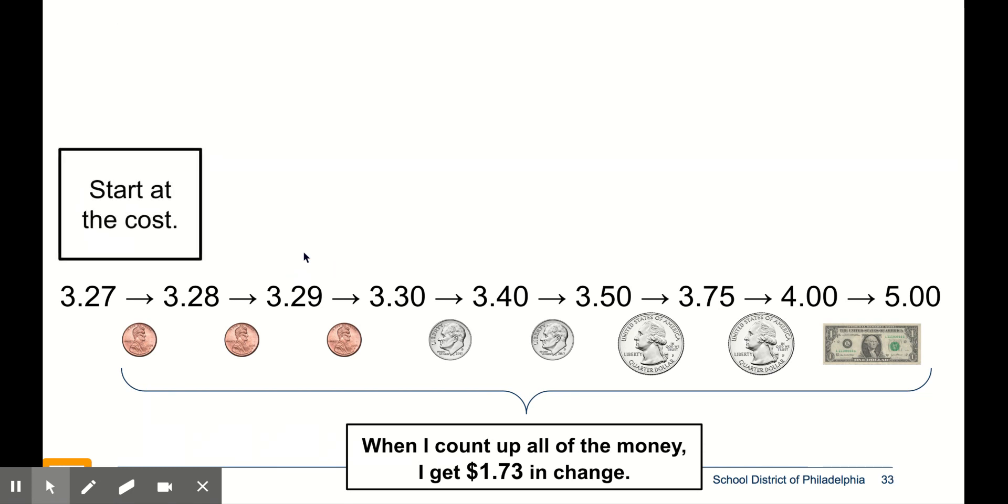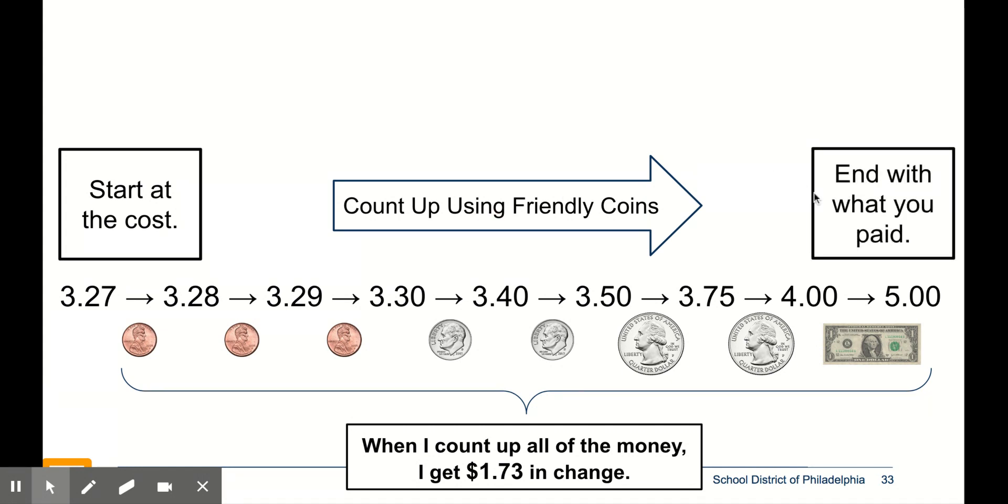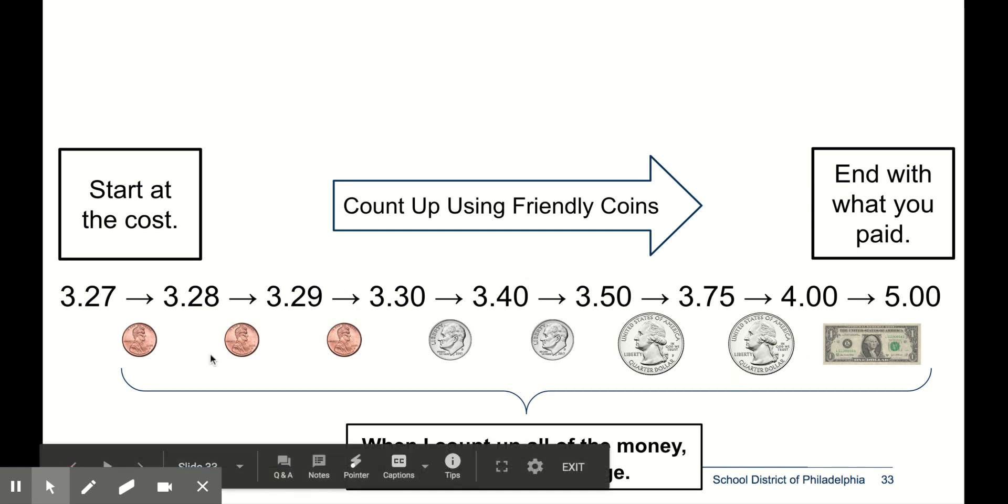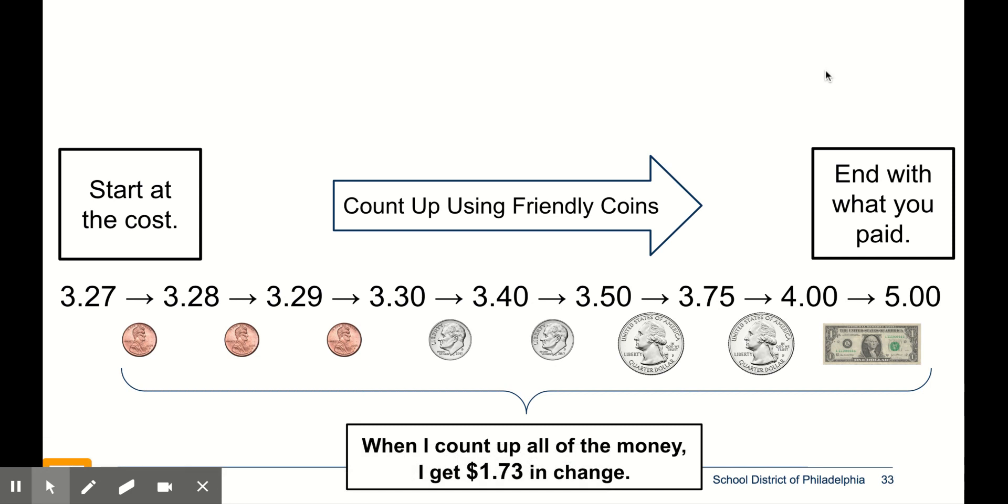So when you're making change, you start at the cost. You count up using friendly coins. You don't have to use the same coins I used. You use whatever coins are friendly to you. You end with what you paid. And then you count up all of the money that you used to figure out how much change you get.